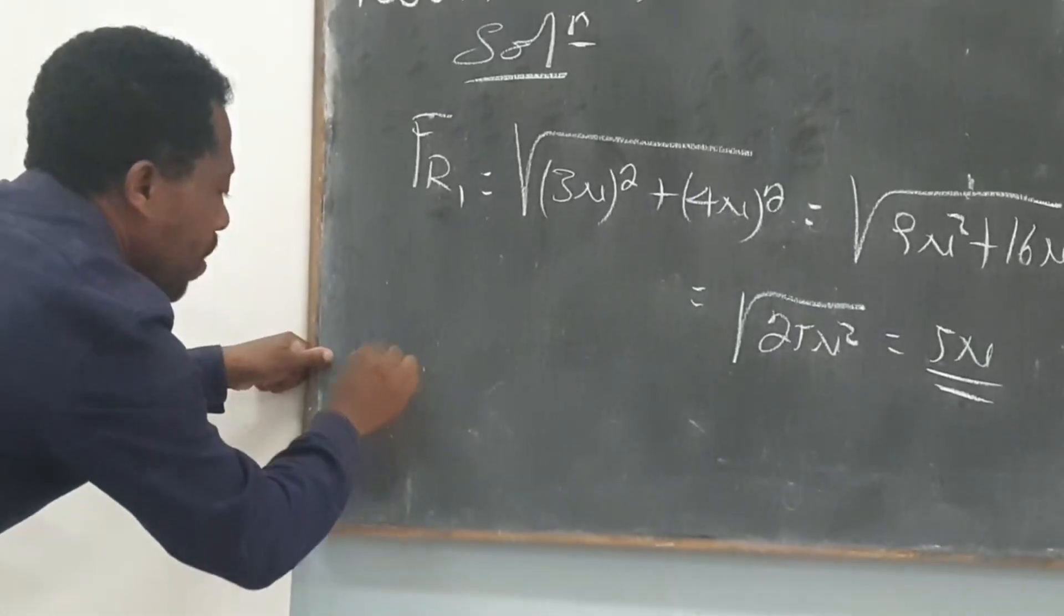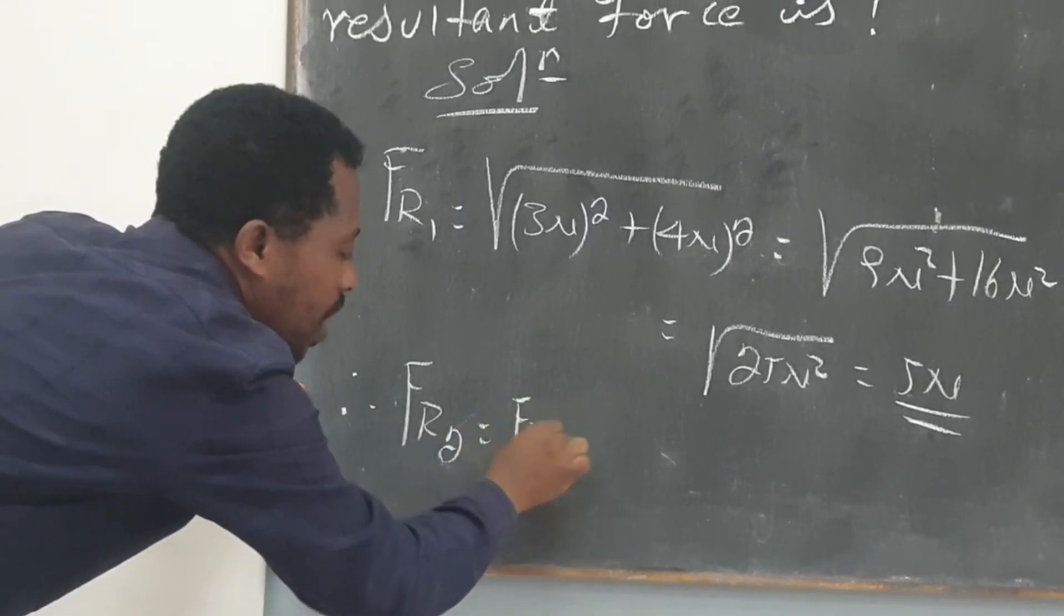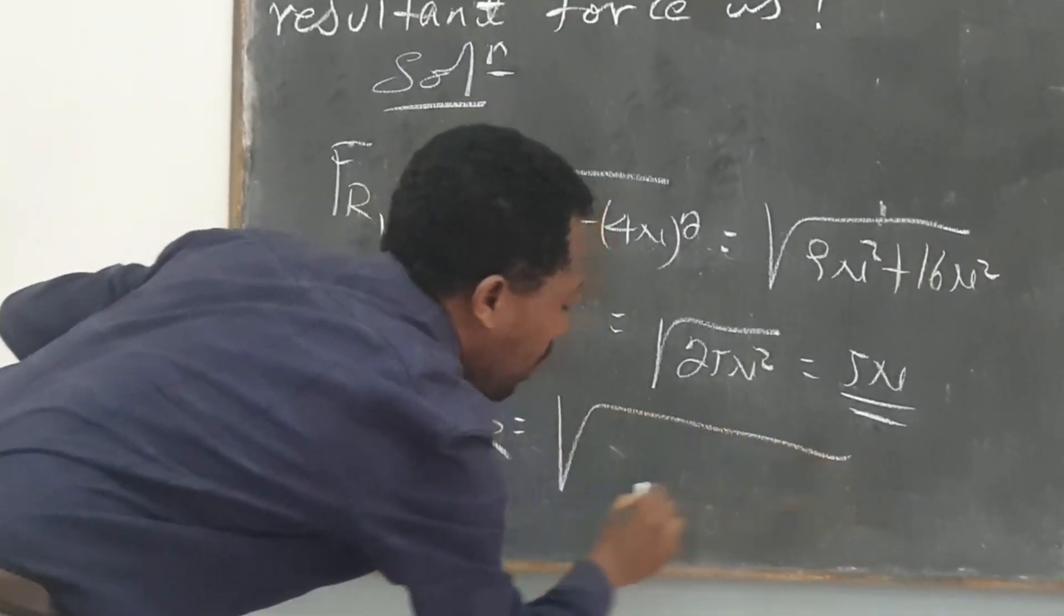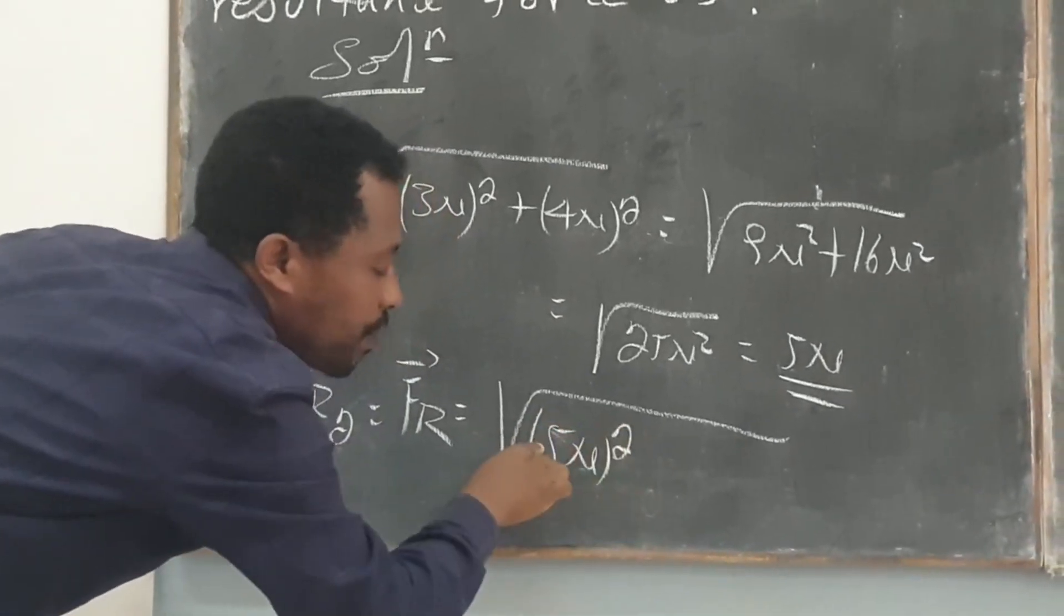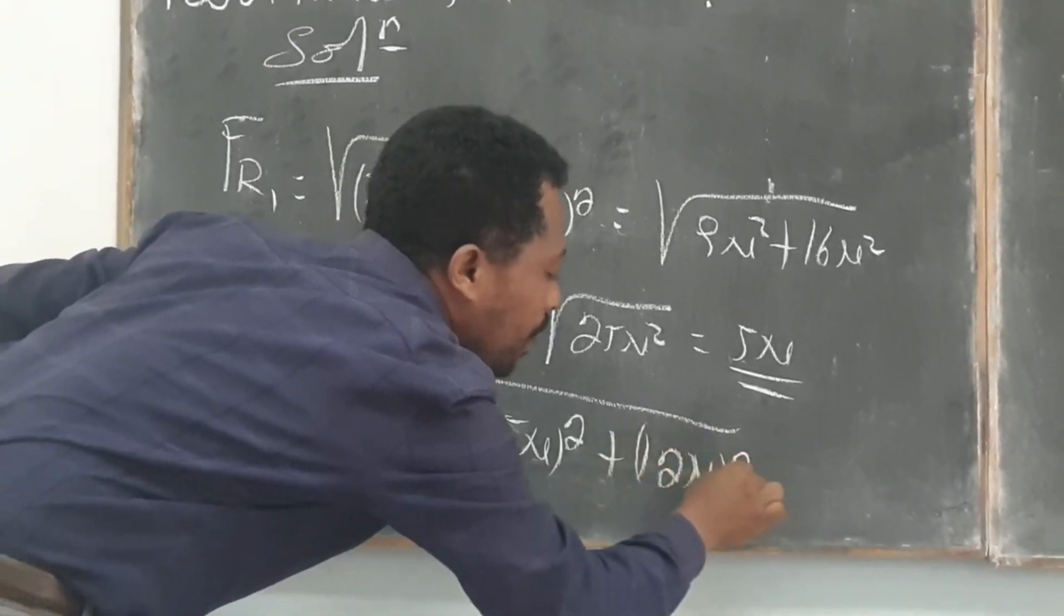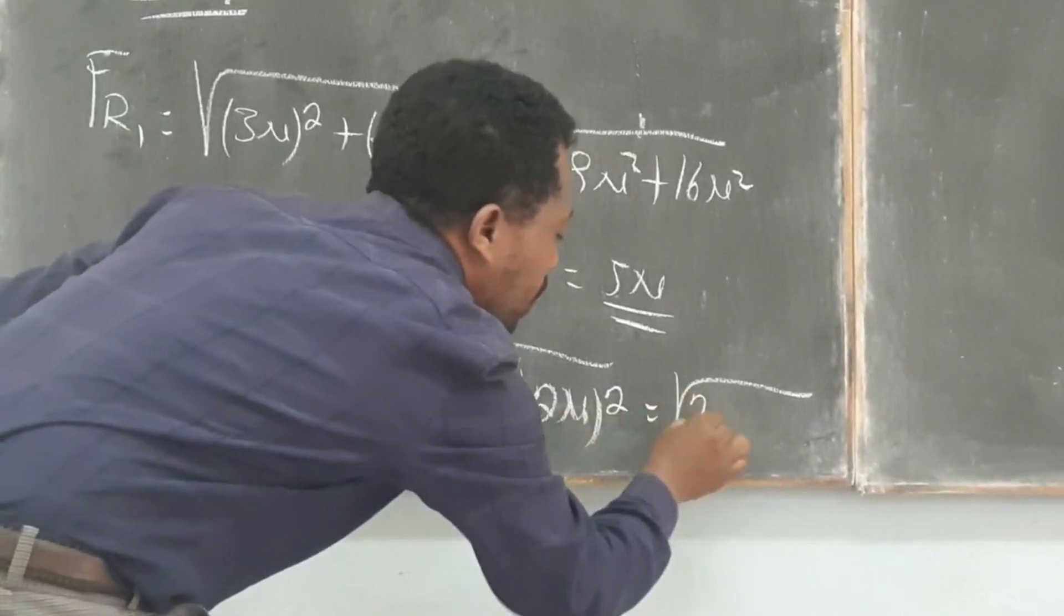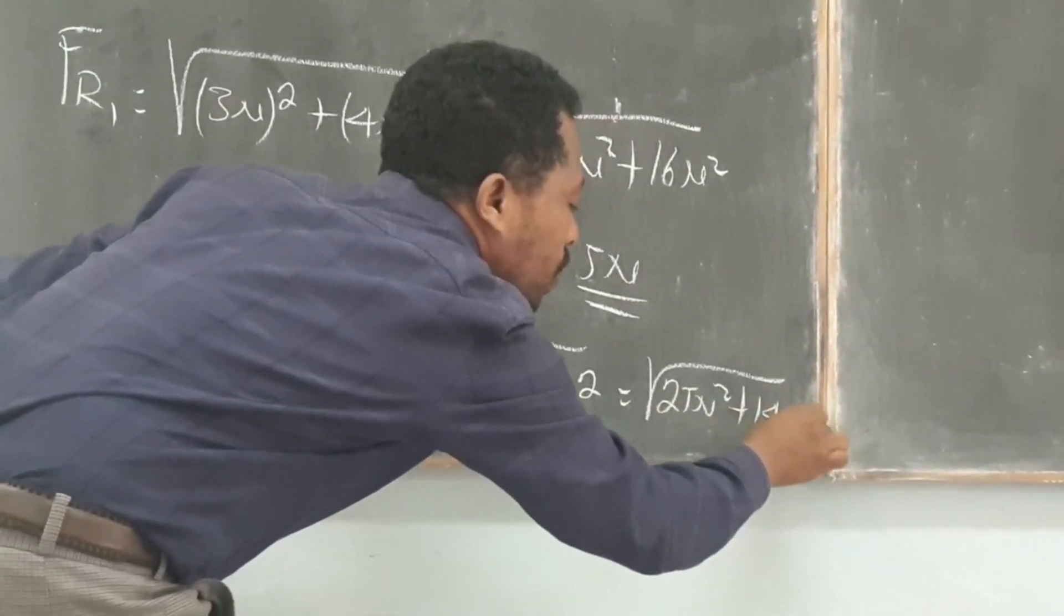We have to find the net. Now, therefore, F2, it becomes square root of 5 squared Newton plus square of 12 Newton. Then it becomes 25 square of N plus 144 square of N.